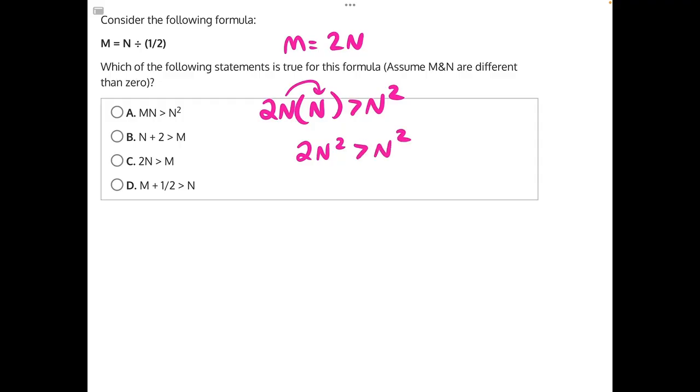This will always be a true statement because since this N is squared, that means no matter what we plug in, whether it's a negative number or a positive number, the result is always going to be a positive number because a negative times a negative will yield a positive. So, if this is always positive, and it's always double of this positive number over here, that means it's always going to be bigger. And that makes answer choice A our correct answer.